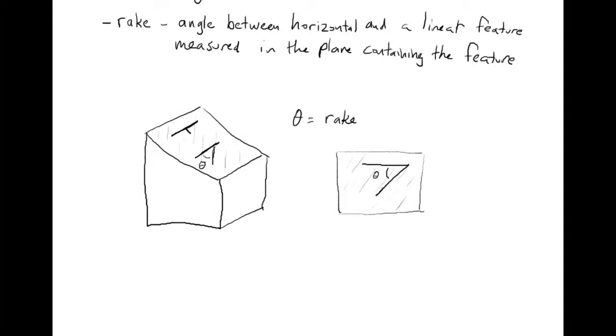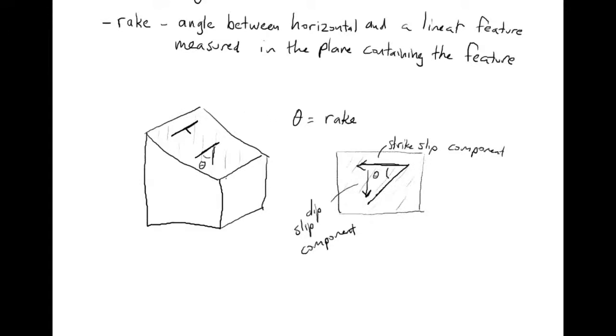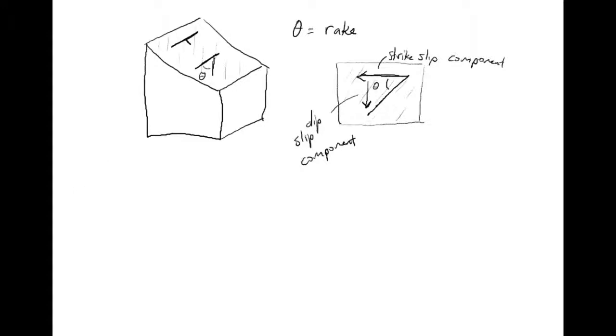So we could think about this as here's this would be the strike-slip, you could break it into the components of motion, strike-slip component, this would be the dip-slip component. That's kind of an aside. The main thing here is just this idea of rake. If we have, we don't necessarily need to take a trend and a plunge if we know the strike and dip. The rake is the only thing we need to get the line, so it's just one more measurement.